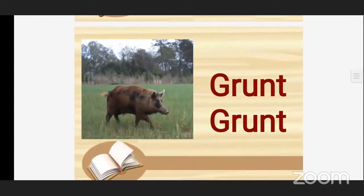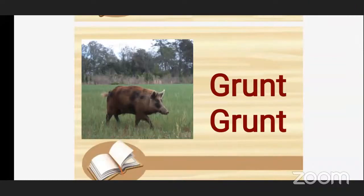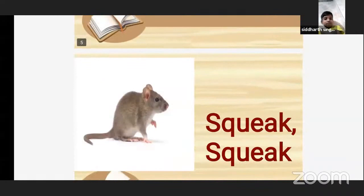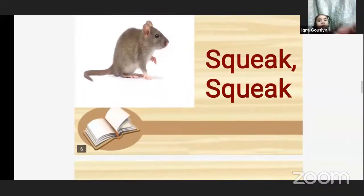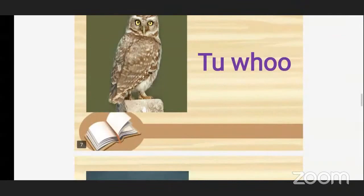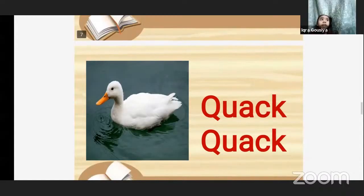Which animal is this? Children, tell me which animal is this? Peek. Is peek a wild animal or domestic animal? Domestic animal. Next one — which animal is this? Mouse. Monkey. Owl. And which one is this? Duck — is duck a domestic animal or wild animal? Domestic animals.